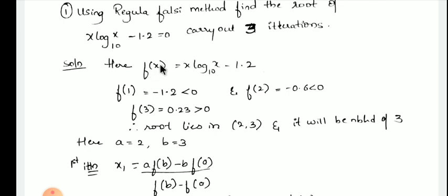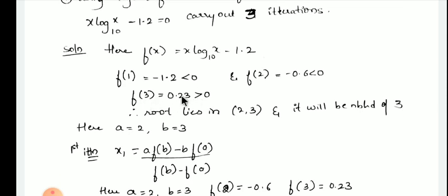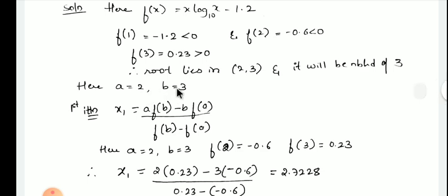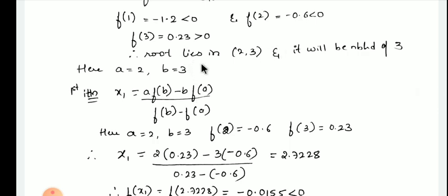We will check with the numbers. First I will put x = 1, and we get the answer as minus 1.2, which is less than 0. Remember, whenever log to the base 10 is there, you have to press log itself; whenever log to the base e is there, press ln. For f(2), x is replaced by 2, giving minus 0.6, which is again less than 0. For f(3), the answer is 0.23, which is greater than 0. Therefore the root lies between 2 and 3, so a = 2 and b = 3, with f(2) = −0.6 and f(3) = 0.23.